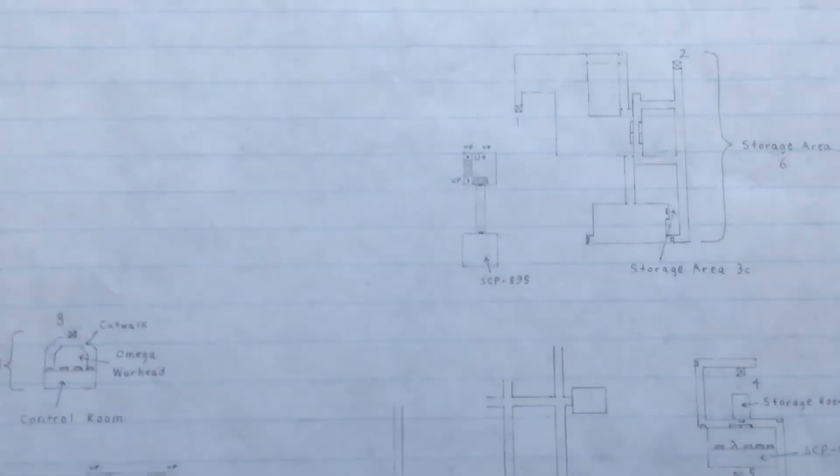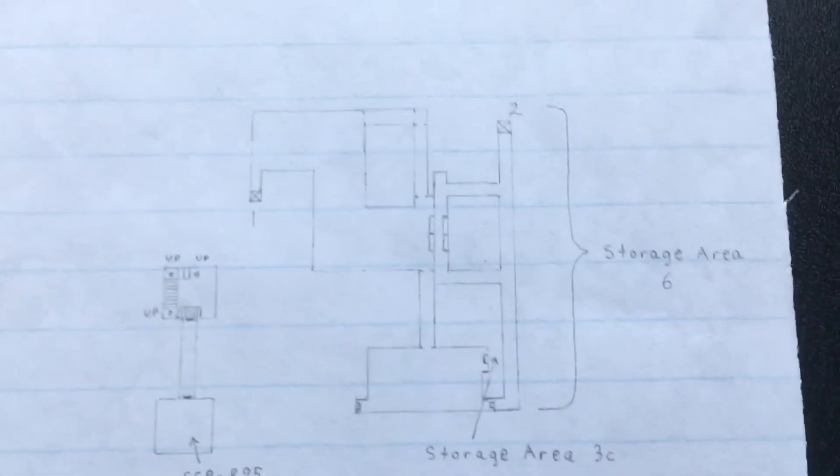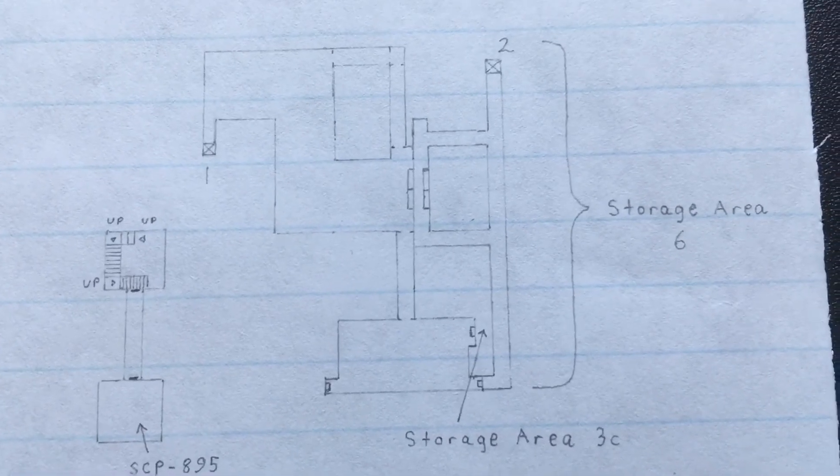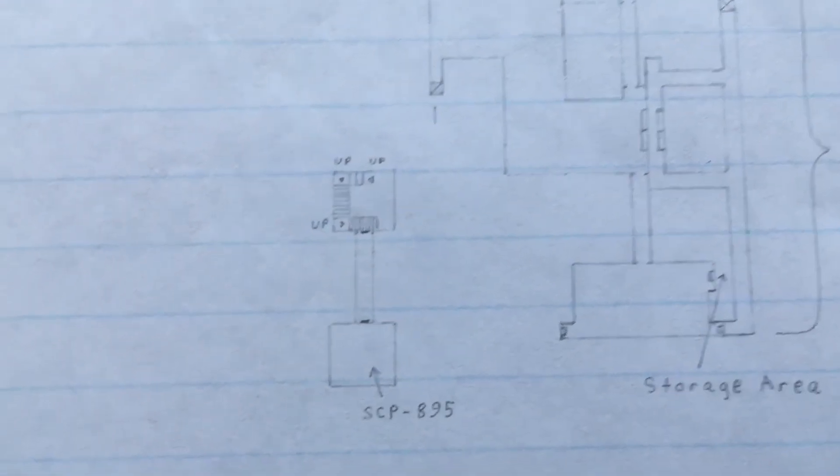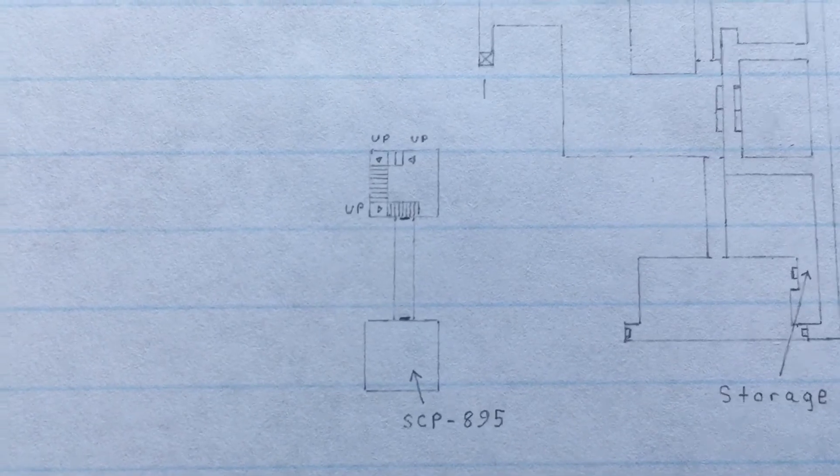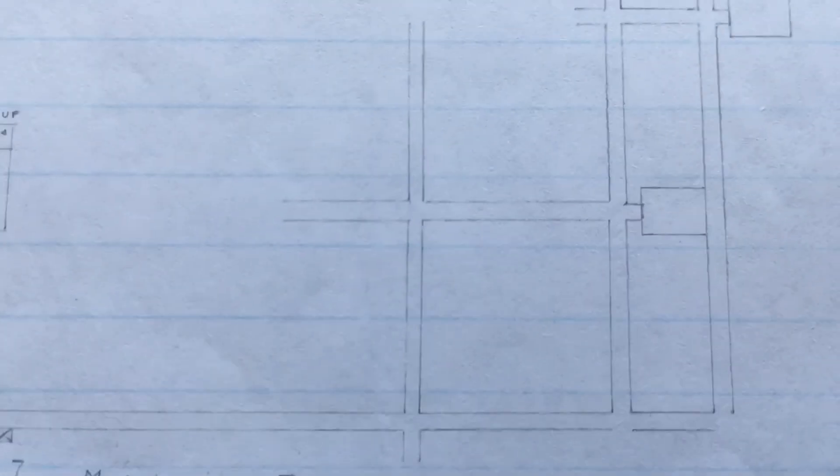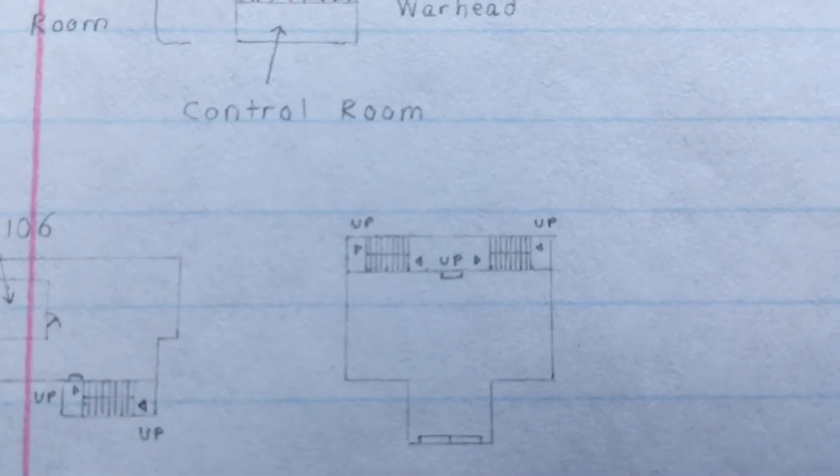Last but not least, we have the lower lower floor below the one that we were just on. Let's start here - Storage Area 6 and Storage Area 3C. This is where 939 hangs around. I think there's three of them, so yeah, there's the two elevators. Here's the actual 895 containment chamber. Here's the maintenance tunnels, which I never finished, but you can find an SCP-500 pill down here.